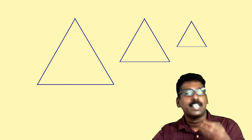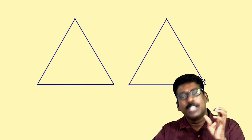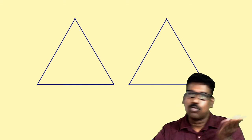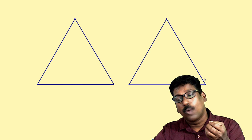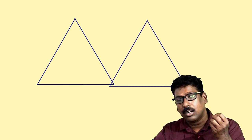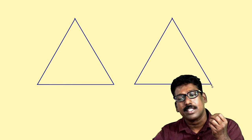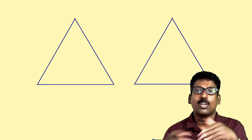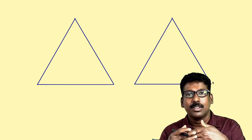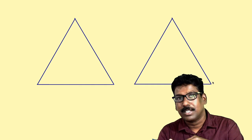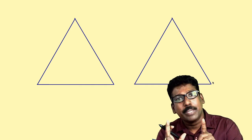Here you have triangles. Are they similar? You can see some of these are equilateral triangles, so they all have the same shape — so they are similar. Now what about these two equilateral triangles? Are they similar? Of course they are similar because they are equilateral. Now are they congruent? If I keep this triangle on the first, all the sides coincide exactly. That means these two triangles are congruent and similar. So all congruent figures are similar, but all similar figures need not be congruent.